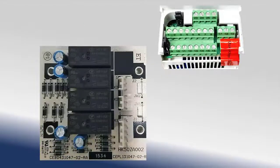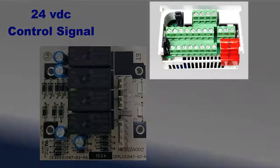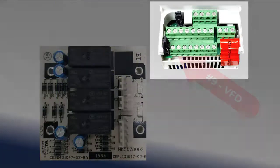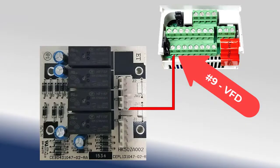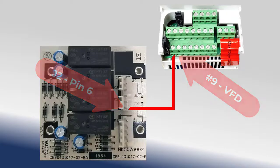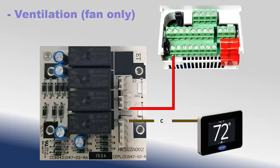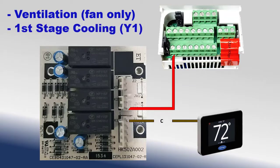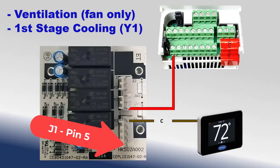This 24-volt DC control voltage is generated by the VFD and routed from terminal number 9 on the ACS320 VFD terminal strip to the fan control board terminal J2, pin 6. During ventilation operation, or the first stage of cooling in two-stage equipment, the thermostat's G signal is routed to the fan speed board at terminal plug J1, pin 5.